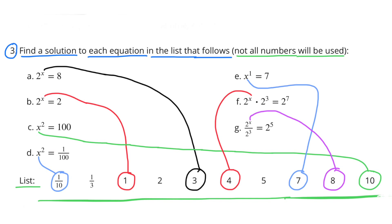Part E. X to the power of 1 equals 7. And you have 7 to the power of 1 equals 7. Part F. 2 to the power of 4 times 2 to the power of 3, and that equals 2 to the power of 7. Part G. 2 to the power of X divided by 2 to the 3rd power equals 2 to the 5th power. Substitute the X with an 8, and you'll have 2 to the 8th power divided by 2 to the 3rd power equals 2 to the 5th power.